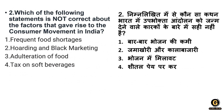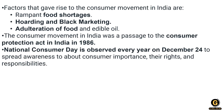Question 2: Which of the following is NOT correct about factors that gave rise to the consumer movement in India? Options are: frequent food shortage, hoarding and black marketing, adulteration of food, and tax on soft beverages. We have heard about food shortages, hoarding, black marketing, and adulteration of food in India, but the tax on soft beverages movement has not occurred in India. So the correct answer is option 4: tax on soft beverages.